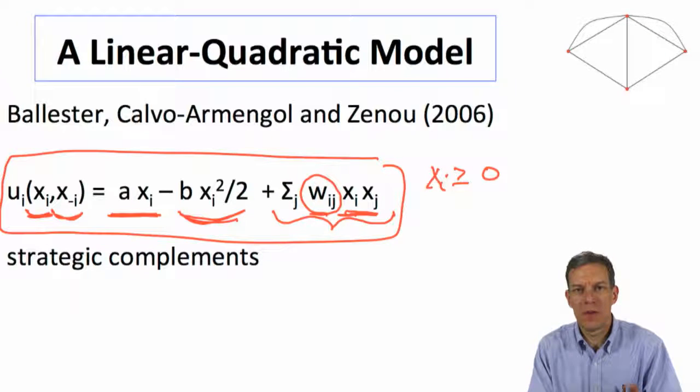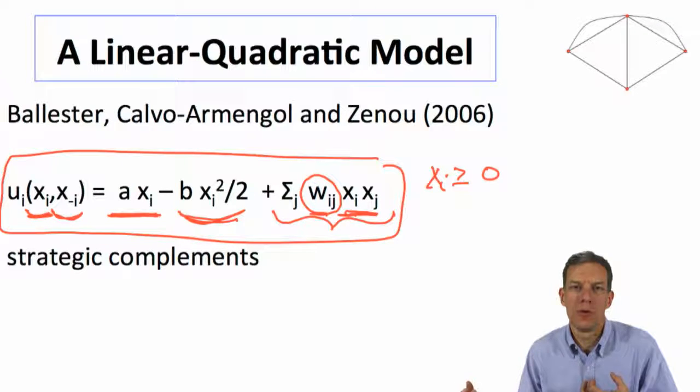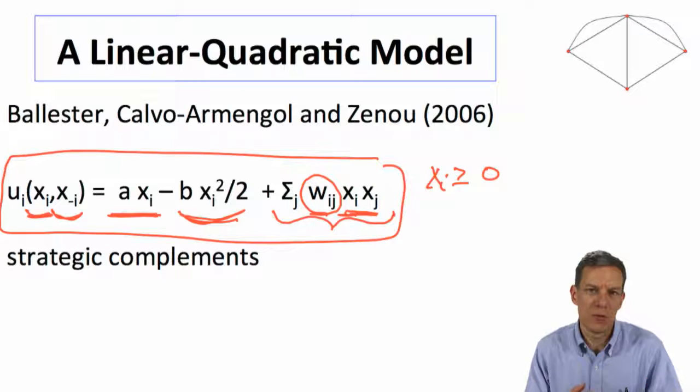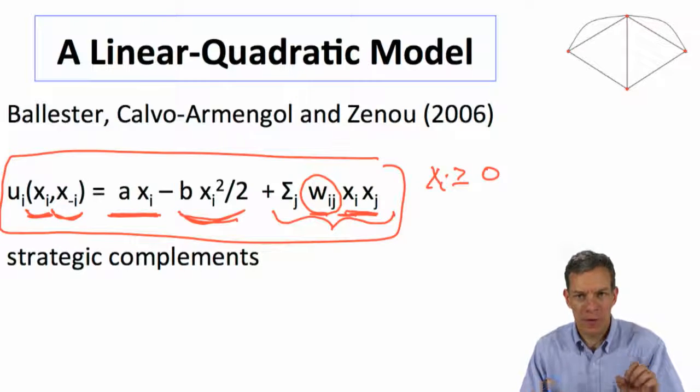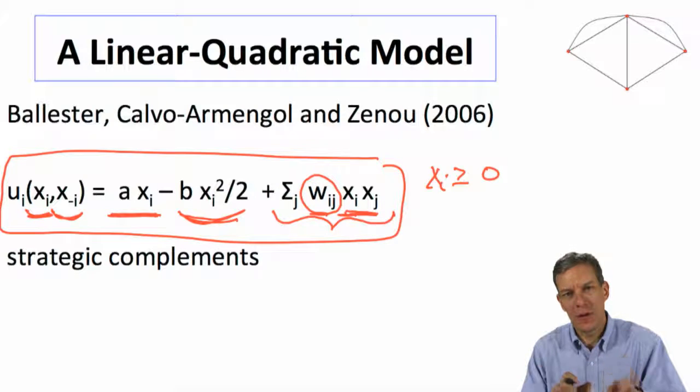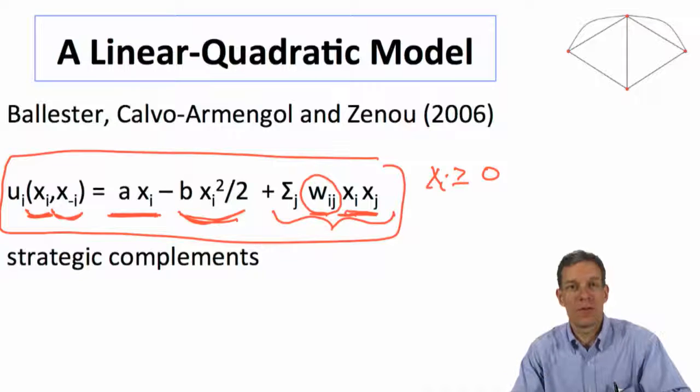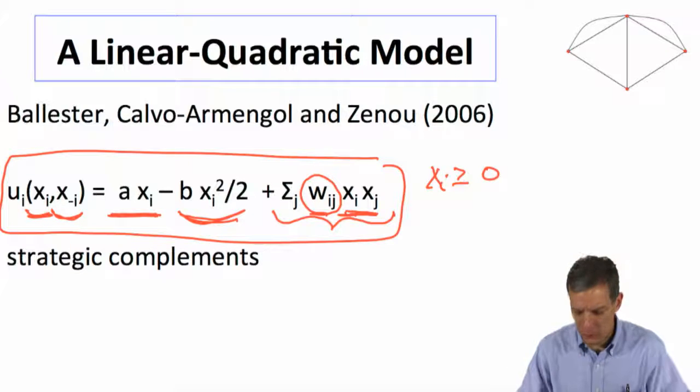So the nice thing about this is in this quadratic form, it's going to be easy to figure out what's my best action given what other people are doing, and then to solve for a Nash equilibrium in this world is fairly easy. We'll be able to find a set of actions such that everybody is best responding to everybody else. We'll be able to solve that as a function of the network in a really clean and simple form.